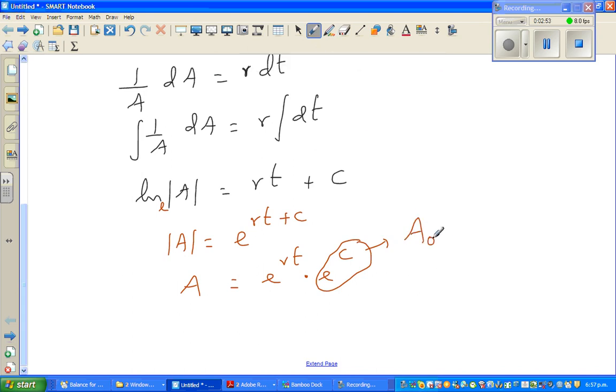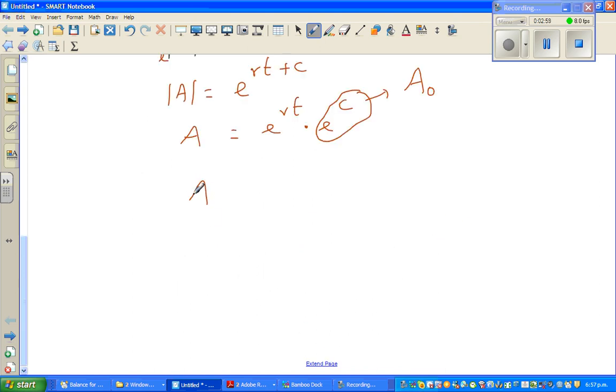I can say A, which is the amount you get after a particular time, equals A₀ × e^(rt). A₀ in this case is the initial amount deposited, or the principal.